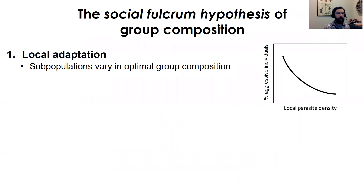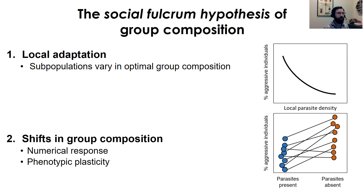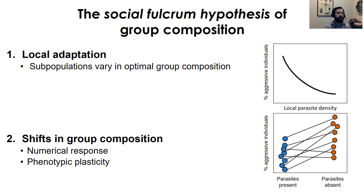The optimal group composition changes depending on parasite risk, and this could show up in several ways. First, as a product of historical selection, we may find a negative relationship between local parasite density and percentage of aggressive individuals across subpopulations — similar to the geographic mosaic theory of co-evolution. Second, groups may actively shift their phenotypic composition in the presence of parasites, either as a numerical response like the baboons or via phenotypic plasticity, where individuals shift behavioral expression toward the more optimal mixture.